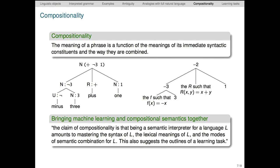This quotation from our article begins to get at the synthesis between compositional semantics and machine learning that we're after. It begins, the claim of compositionality is that being a semantic interpreter for a language L amounts to mastering the syntax of L, the lexical meanings of L, and the modes of semantic combination for L. So once this much is learned, one has the capacity to understand novel combinations and syntactic configurations. So this principle gives us an understanding of how we manage to be creative with language, routinely producing and understanding sentences that have never been uttered before.